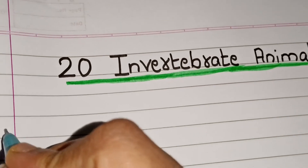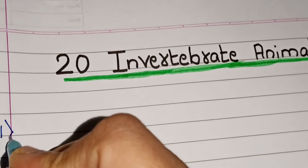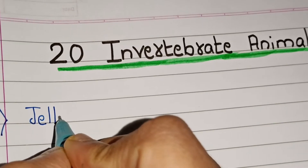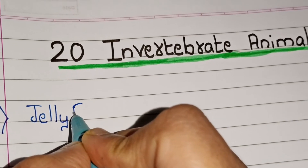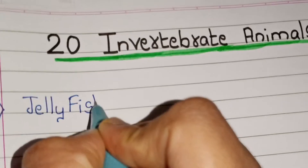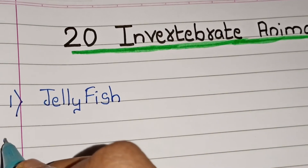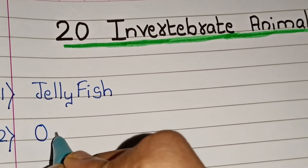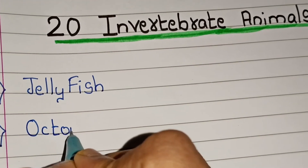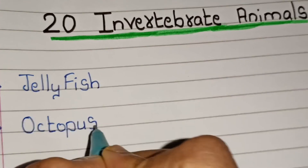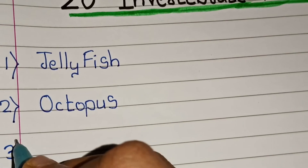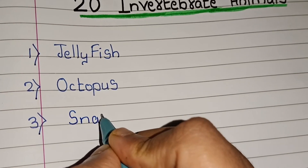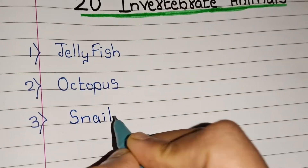Hello friends, welcome to Triyankush Learning Channel. Today we are going to learn 20 invertebrate animal names. Invertebrate means the animals which do not have backbones. So let's start. First: jellyfish. Second invertebrate animal name: octopus. Third: snail.